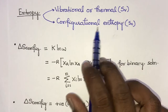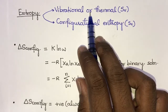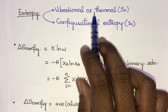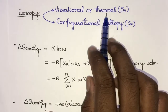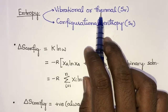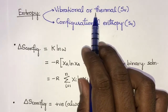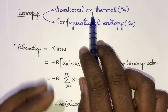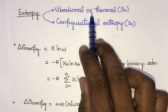Vibrational entropy is associated with atomic vibration in the material. The magnitude of this vibrational entropy increases as we increase the temperature and decreases as the cohesive strength of the material increases. Vibrational entropy also plays a major role in many polymorphic transitions, that is from one crystal structure to another.